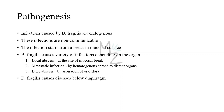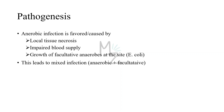Bacteroides Fragilis causes a variety of infections such as local abscesses at the site of mucosal break, metastatic abscesses by hematogenous spread to distant organs, or lung abscesses by aspiration of oral flora. Generally, diseases caused by Bacteroides Fragilis are below the diaphragm. Local tissue necrosis, impaired blood supply, and growth of facultative anaerobes at the site contribute to anaerobic infections. Facultative anaerobes such as E. coli utilize oxygen, reducing it to a level that allows anaerobic Bacteroides to grow, resulting in a mixed facultative and anaerobic flora.